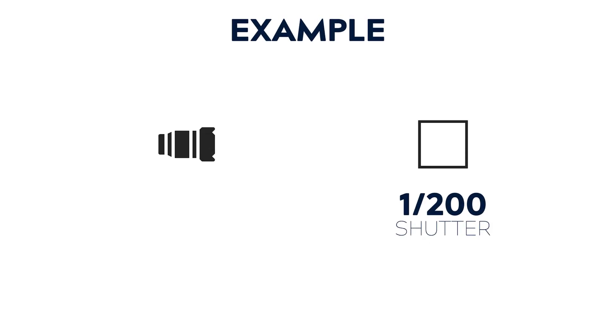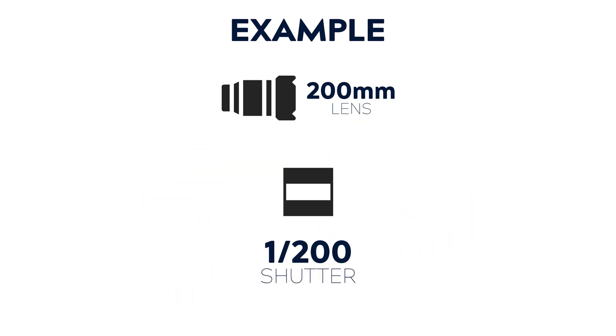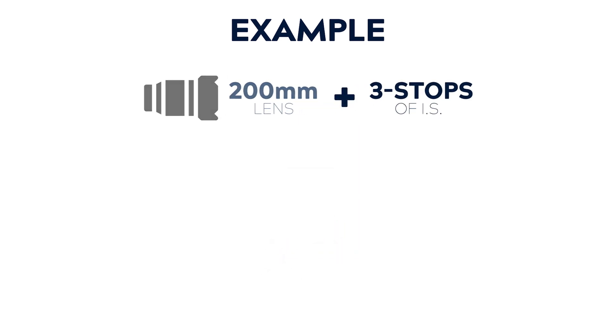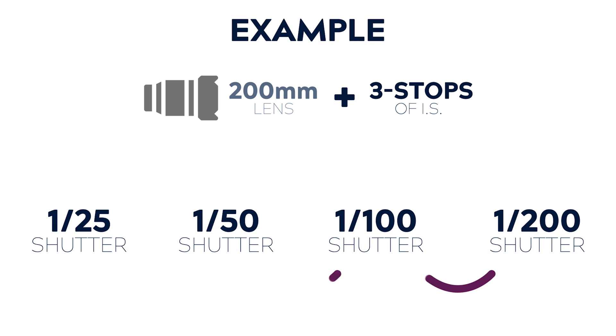So what does this mean? It means that shutter speed stops are directly related to image stabilization stops. Image stabilization allows you to take the same photograph so many stops slower in terms of shutter speed than you would have been able to before. Let's go back to our example: if you're taking a photo at 1/200th of a second on a 200mm lens, and your lens has three stops of image stabilization built in — without IS on, you must shoot at 1/200th to avoid motion blur. But once you switch it on, you can now take the same photo at 1/25th of a second instead — three shutter speed stops slower.